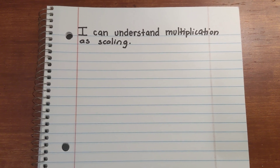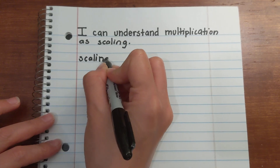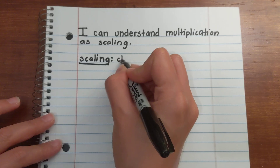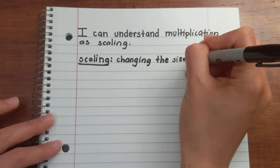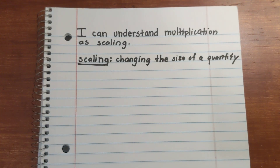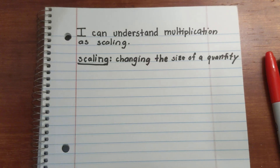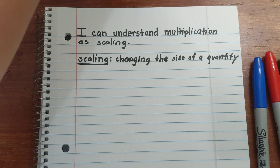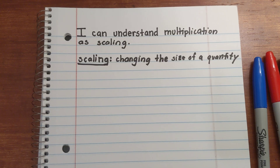Today we're going to look at understanding multiplication as scaling. First, let's identify what the word scaling means for math. Scaling is changing the size of a quantity. We're looking at three different groups when we look at scaling. When you change the size of a quantity, you're either going to shrink it or stretch it. When you shrink something you decrease it, when you stretch something you increase it, and if it stays the same, it stays the same.